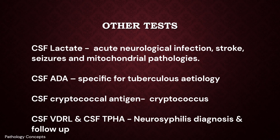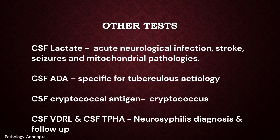CSF lactate, produced from anaerobic glycolysis, rises in acute neurological infections, stroke, seizures, and mitochondrial pathologies, and is specific for tuberculosis. CSF cryptococcal antigen is used to diagnose cryptococcal infection. CSF VDRL and CSF TPHA are used for neurosyphilis — the TPHA CSF dilution cutoff is more than 1:640, which has high diagnostic specificity. In syphilis, serological cure is considered if a 4-fold decline in initial TPHA titers occurs within 12 months after therapy.